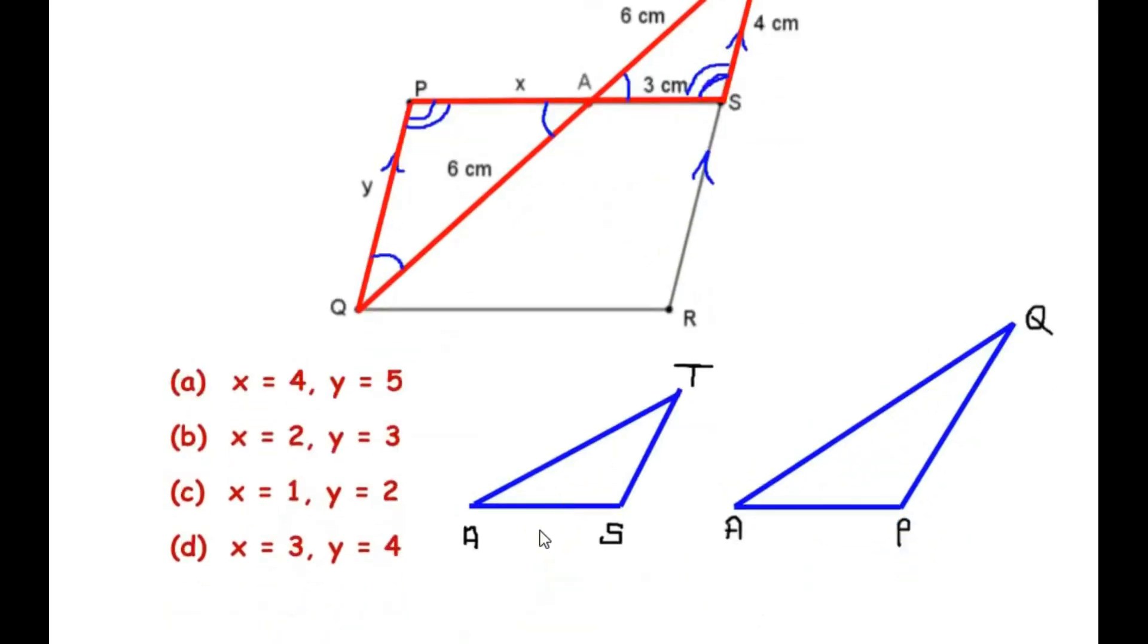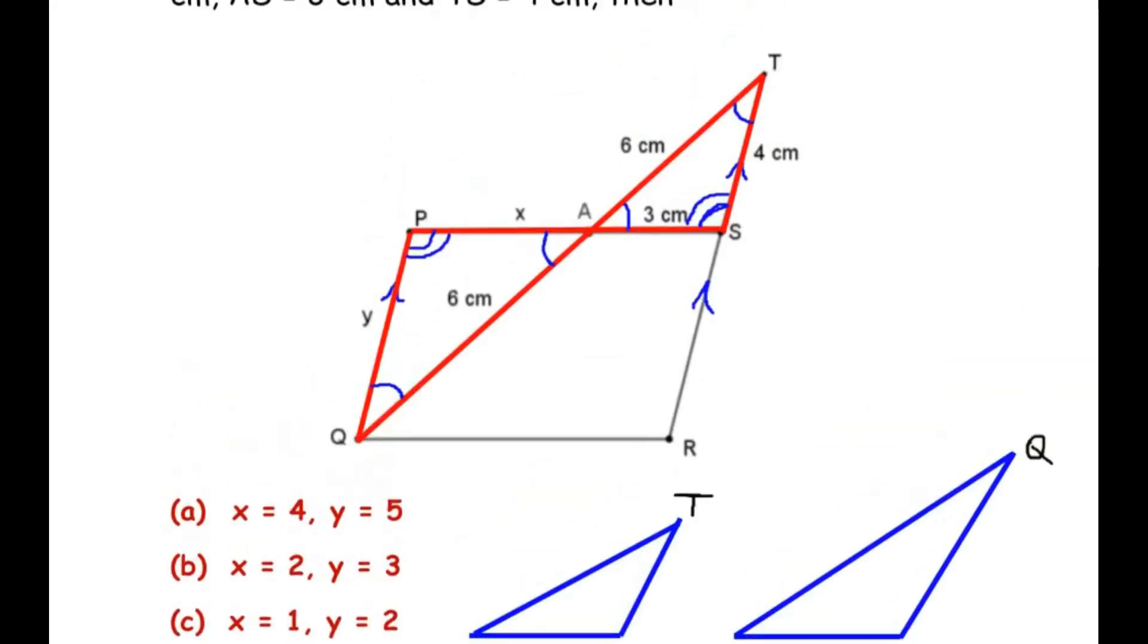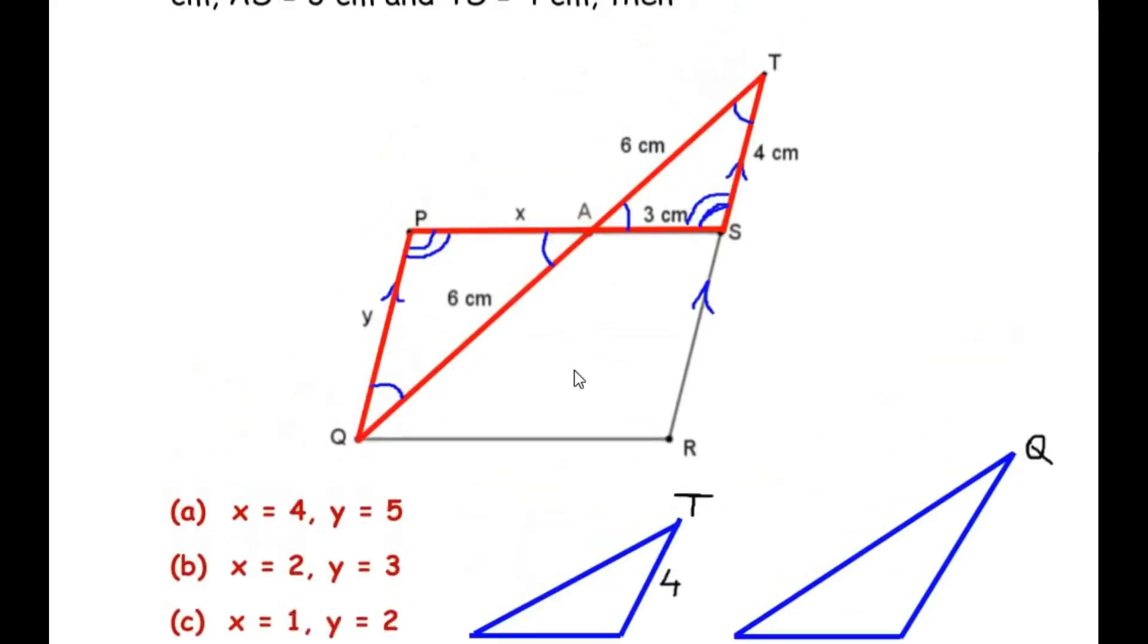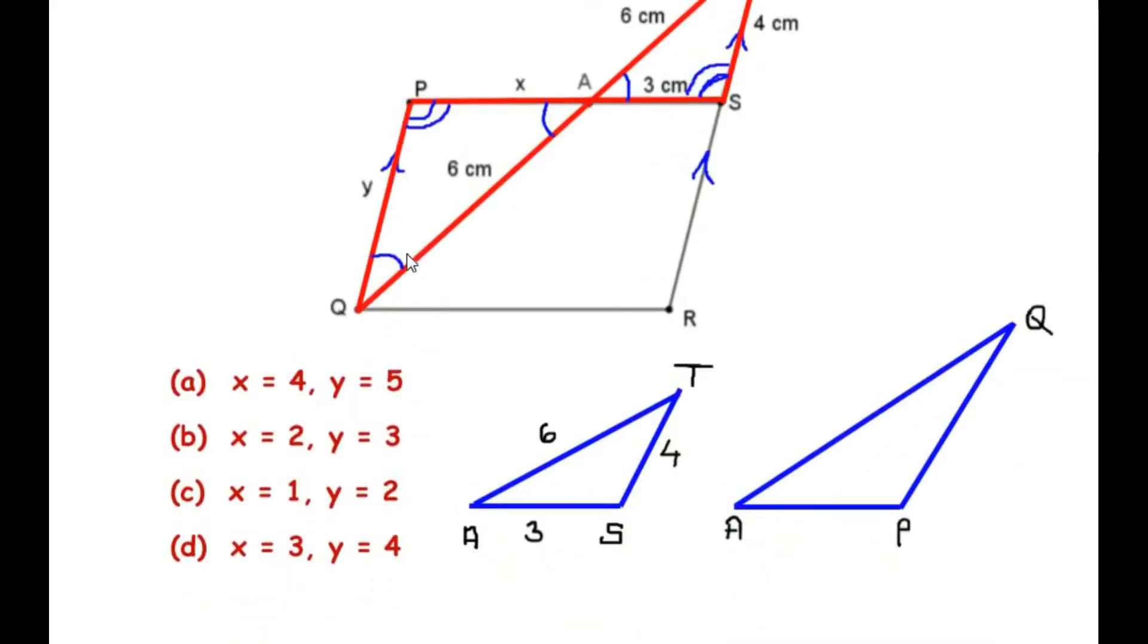The next thing is to write down the side lengths. Now AS was 3 centimeters so let us write here 3. ST was 4 so let us write here 4, and AT was 6 centimeter so write here 6. Similarly for the second triangle, we are going to write AP, so this is going to be x, and PQ this is going to be y, and this AQ was given as 6. And these two triangles are similar as we saw from the angle-angle-angle similarity criterion.